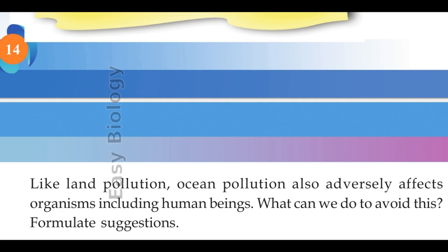Chemicals from pesticides can accumulate in the fatty tissues of animals seen in the ocean, leading to failure in their reproductive system.